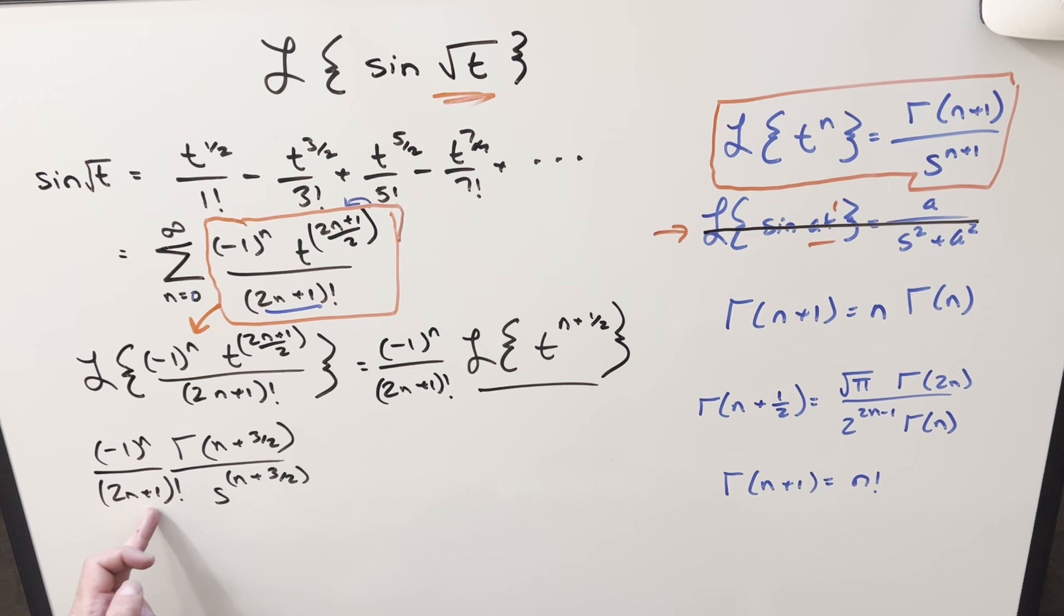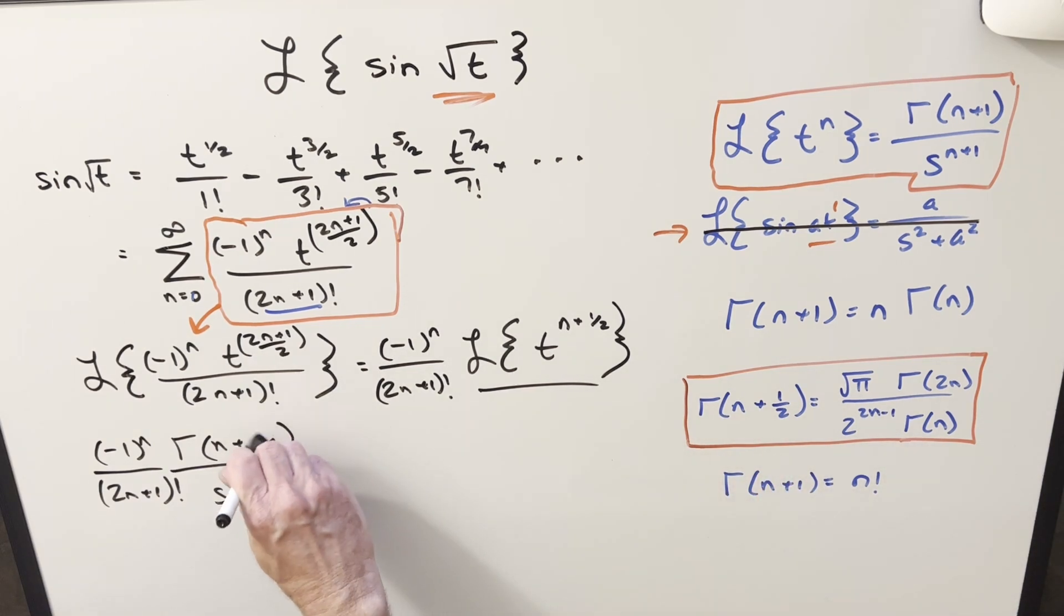And then from here, in order to simplify this, what I want to do is just use our Legendre duplication formula that we have right here. And it's almost set up, right? The only problem is we have gamma of n plus 3 halves. Here we have gamma of n plus 1 half. All I'm going to do is just kind of force it into this form. So for n plus 3 halves, I can write this like n plus 1 plus 1 half, where now our input into this formula is just going to be this piece right here.